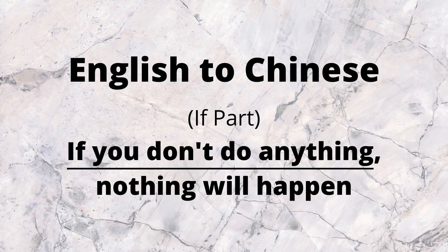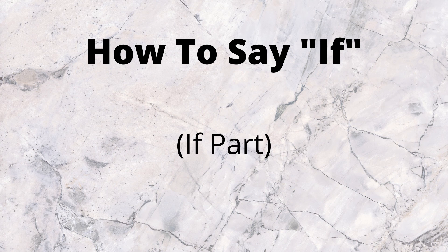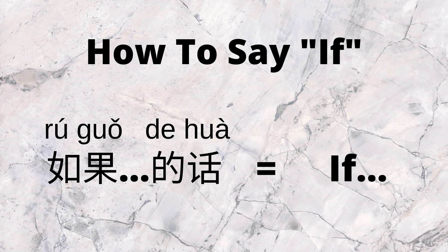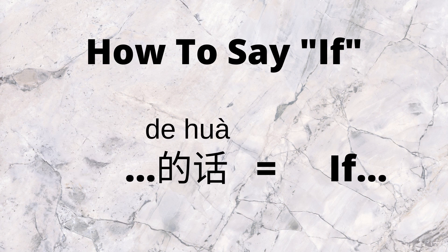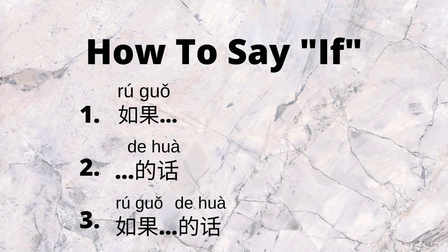To learn how to say 'if', we'll first separate an if-sentence into the if-part and the then-part. For the if-part, there are three patterns we can use, which are all versions of this first pattern: 如果 something 的话 means 'if something'. The other patterns come from simply removing only the end of pattern 1, or removing only the front — so we could use only 如果, only 的话, or both. For this example, we're going to use only 如果.